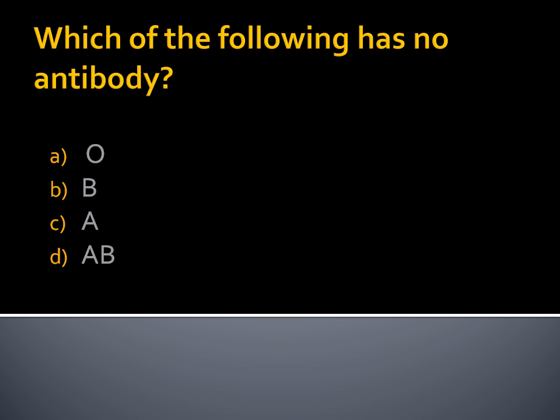Which of the following blood group has no antibodies? Option A, O. Option B, B. Option C, A. Option D, AB. The blood group in which antibodies are not present is blood group AB.